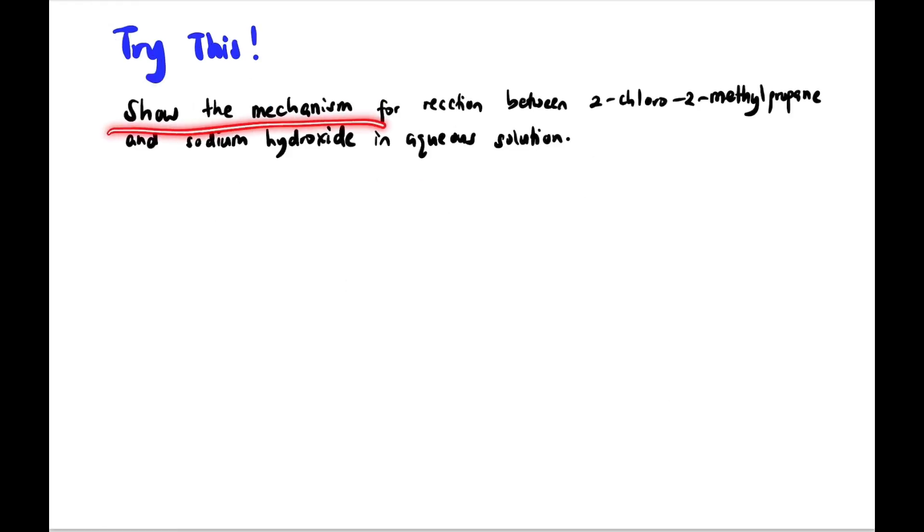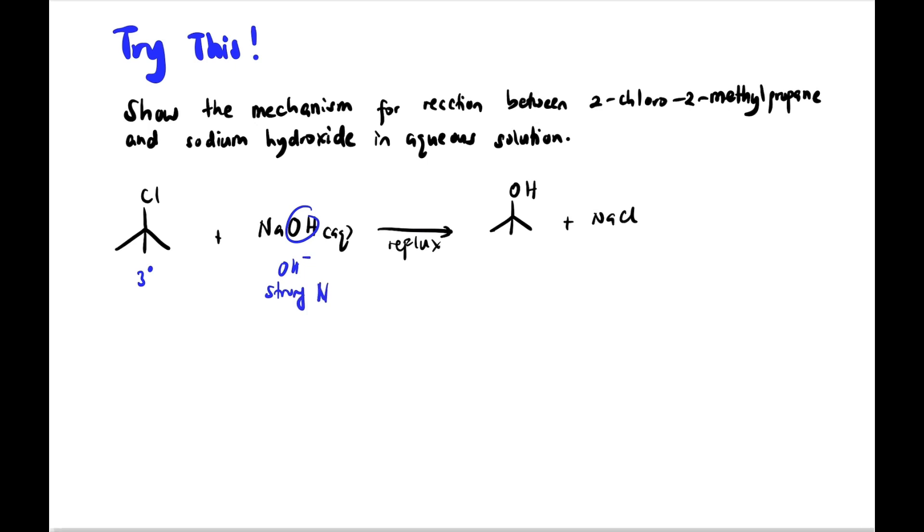Now let's try this question. Show the mechanism for the reaction between 2-chloro-2-methylpropane and sodium hydroxide in aqueous solution. Let's draw first 2-chloro-2-methylpropane, then NaOH. This is the equation, under reflux. We're going to get alcohol. OH will replace Cl. So NaCl is the side product. If we look carefully, our haloalkane class is tertiary haloalkane, and we have OH minus, strong nucleophile.